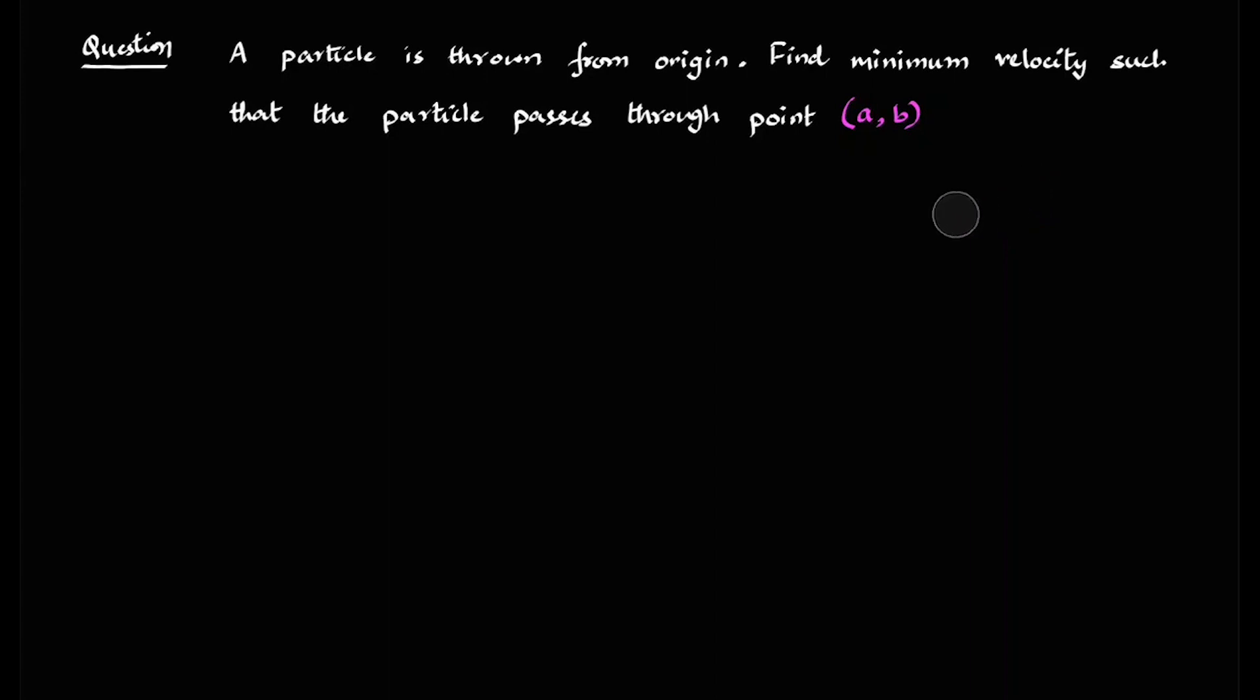So I hope you have already tried this question. Now, let me just try to solve this question in a unique way. So the question says a particle is thrown from origin. Find the minimum velocity such that the particle passes through a point A comma B.